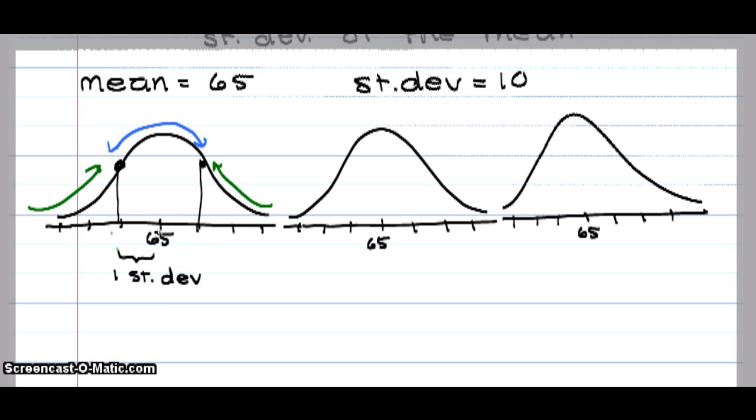If I used an example where my mean was 65 and my standard deviation was 10, and I chose those numbers at random, then one standard deviation below the mean, 65 minus 10, that would put this point at 55.